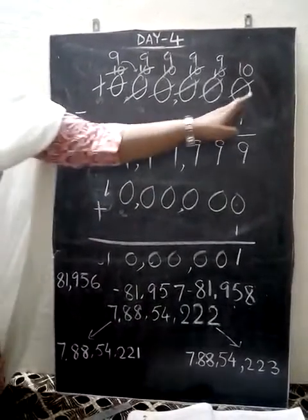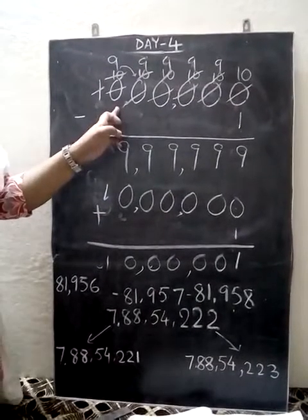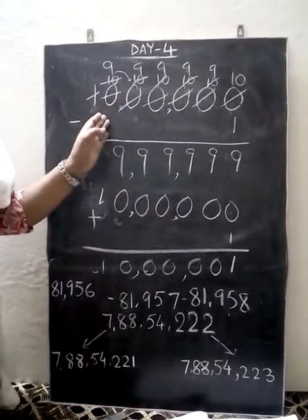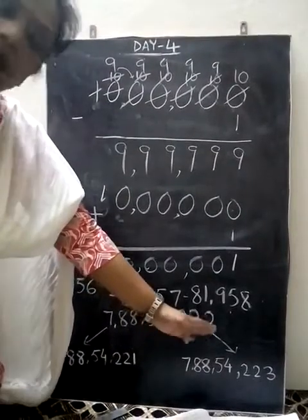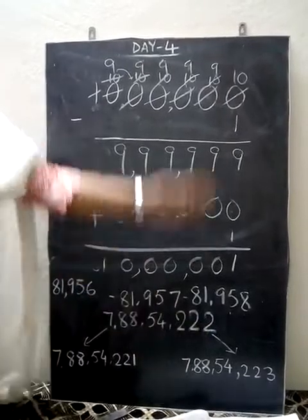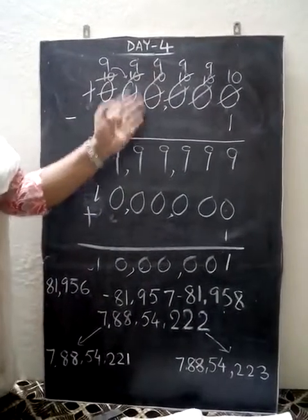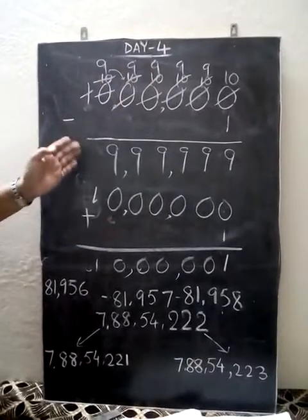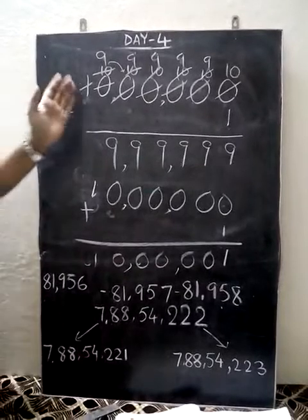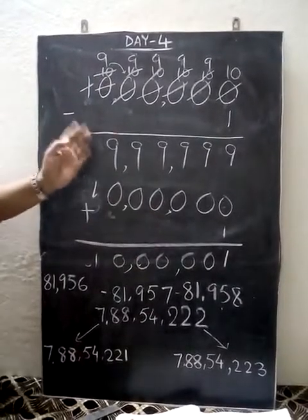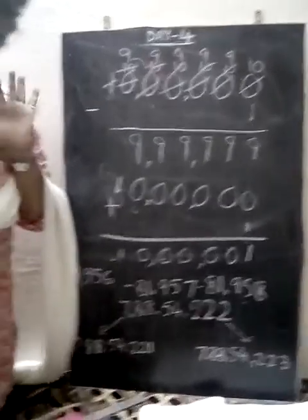This subtraction exercise should be practiced, as this type of question is often given in the exam to find the predecessor and successor. These are all very easy — you just have to look at the last digit and either add 1 or subtract 1. But these are the places where you get stuck, so practice all these with different examples from your assignment and then we will do this without any problem. That's all for today. Have a nice day. Bye.